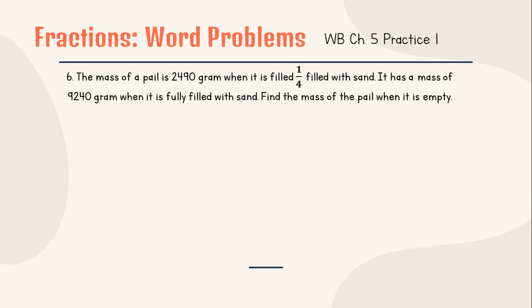Number 6: The mass of a pail is 2,490 grams when it is filled 1/4 with sand. It has a mass of 9,240 grams when it is fully filled with sand. Find the mass of the pail when it is empty.